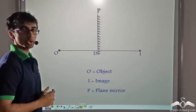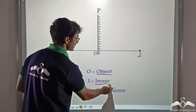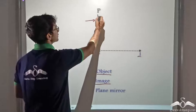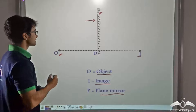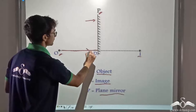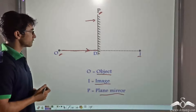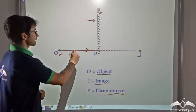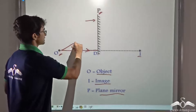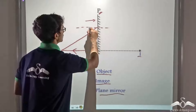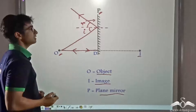Consider the diagram being shown on the board. Here O is the object, I is the image formed by the object, and P is the plane mirror. We are going to consider two rays. One incident ray is going to be incident normally. Since this ray is incident normally, the angle of incidence is zero, so according to the laws of reflection, the angle of reflection will also be zero, and it will be reflected back along its path. We consider another ray incident at an angle, which after reflection moves in this direction.